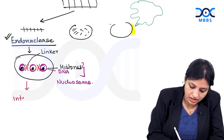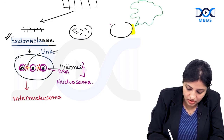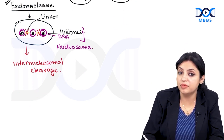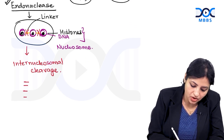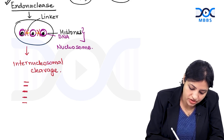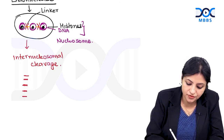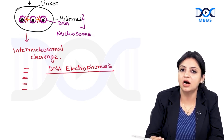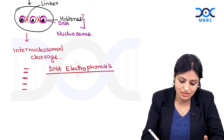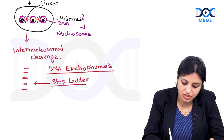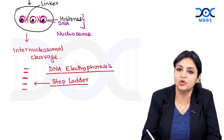This endonuclease causes internucleosomal cleavage — it causes breakdown specifically between the nucleosomes. Because the breakdown is particular, all the cut pieces formed are of equal sizes. If you do DNA electrophoresis, you see all the cut pieces arranged in a stack, all of equal sizes. This gives a pattern called the step ladder pattern on electrophoresis.